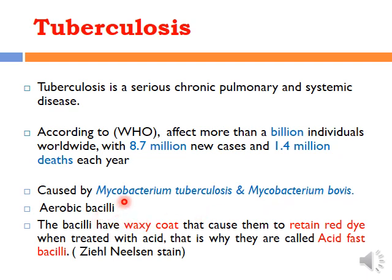These mycobacteria are bacilli and are aerobic, requiring oxygen for their growth. They are characteristically identified by the presence of a waxy coat in their cell wall. When stained with Ziehl-Neelsen stain, they retain a red dye. When exposed to acid-fast decolorization, they resist decolorization and retain the red dye — hence they are called acid-fast bacilli.